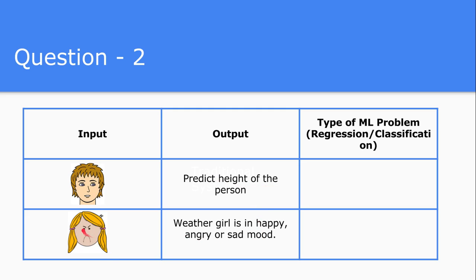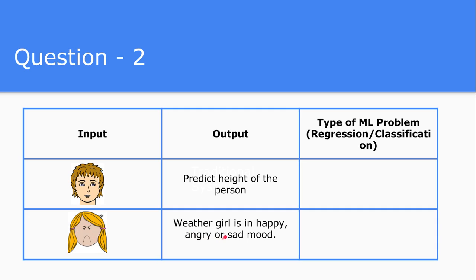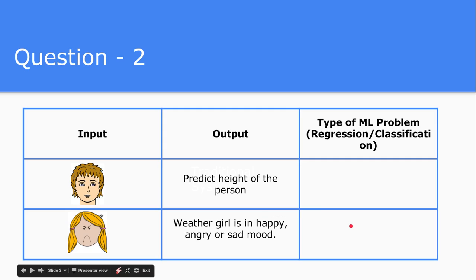In the second case, we have been given the face of a girl and we need to predict whether she is happy, angry, or in a sad mood. By looking at the pixels of the girl's image, we need to predict whether she lies in category one — happy, category two — angry, or category three — sad. The output is a discrete set of values, nothing but finite discrete category values, so this lies in the classification problem.